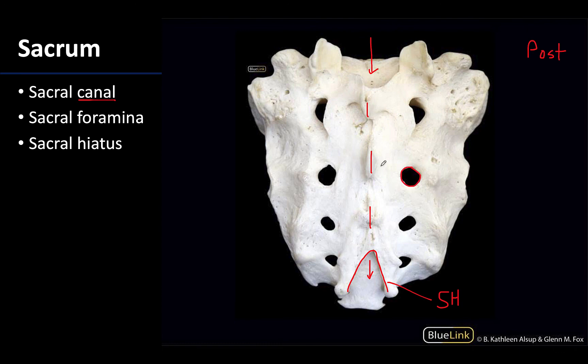Also quite prominent are usually four pairs of sacral foramina. We're looking specifically at the posterior sacral foramina here; flipping it over would reveal the anterior sacral foramina, but they are continuous throughout. These allow the ventral primary rami of the sacral spinal nerves to exit and head to their target tissues.